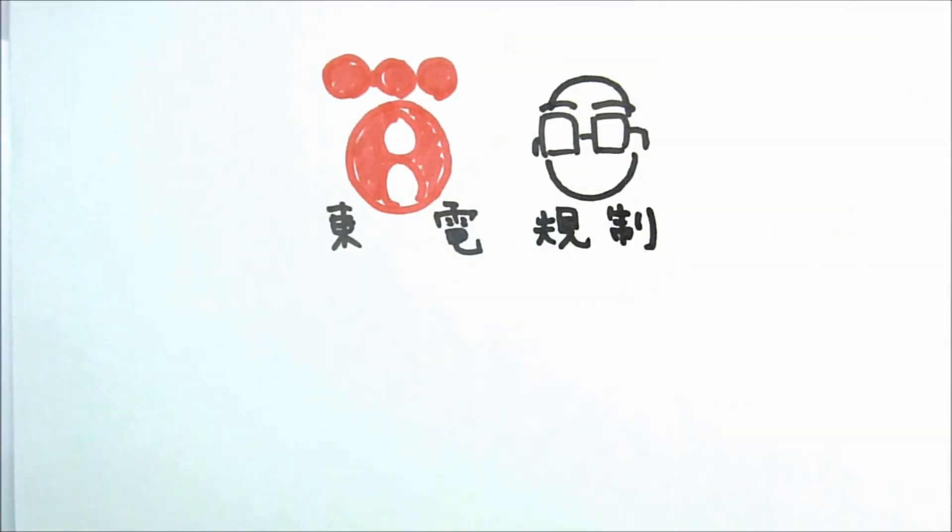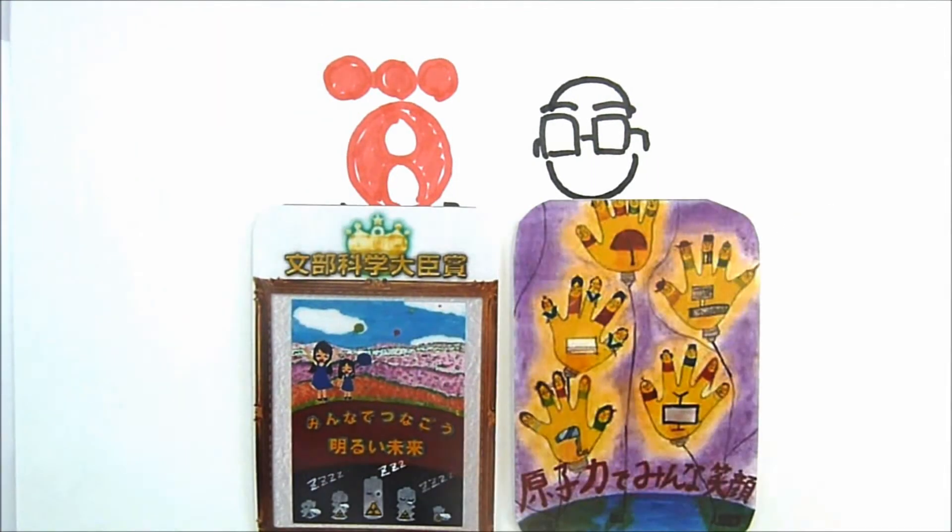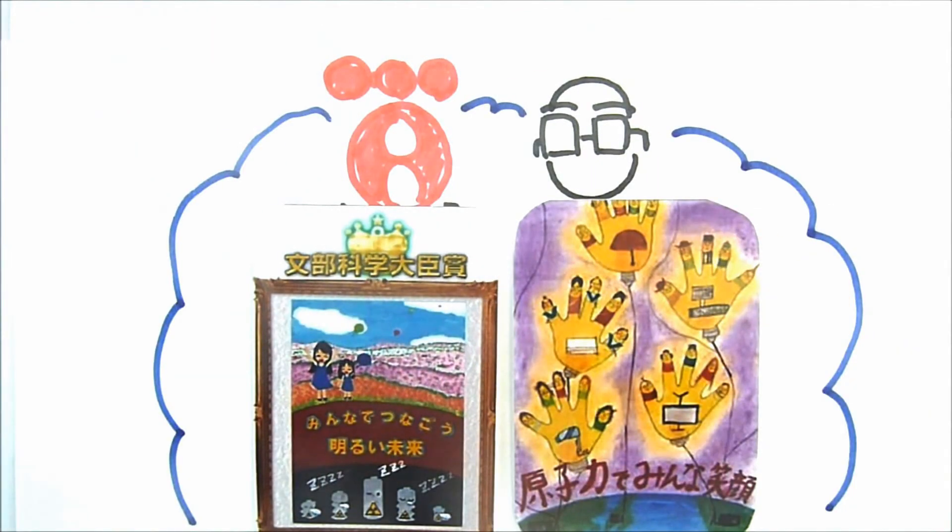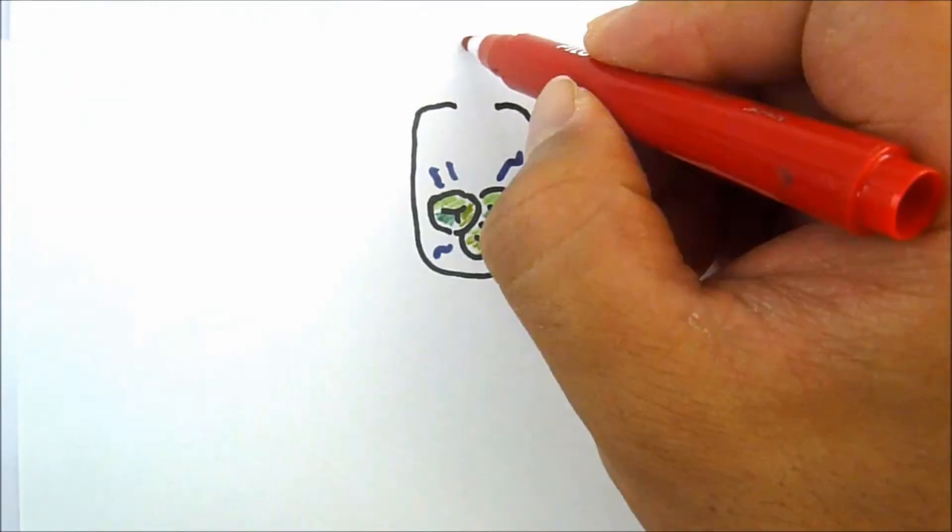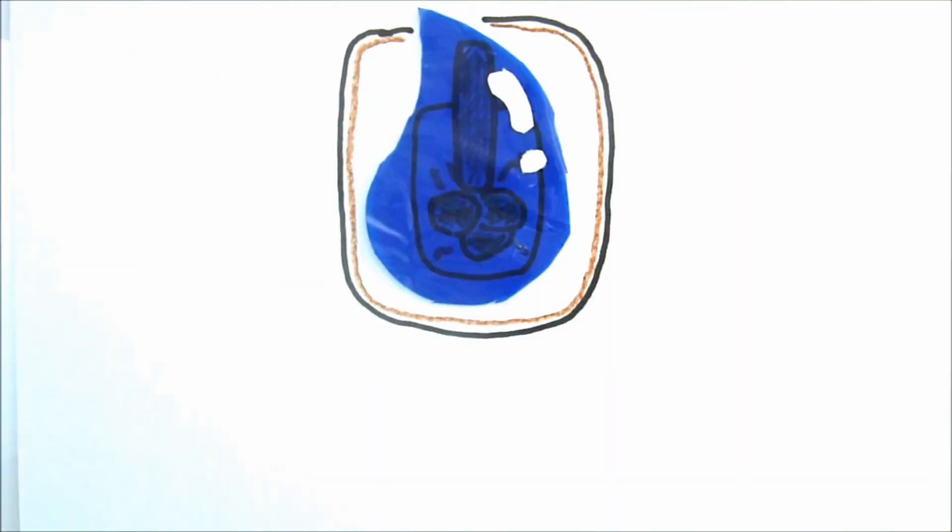Why did TEPCO and nuclear regulators fail to adopt sufficient safety measures? Both the company and the regulators were convinced nuclear plants were safe and fail-proof. They believed three safety systems - shutdown, cooling, and containment - would be enough to deal with any emergency.